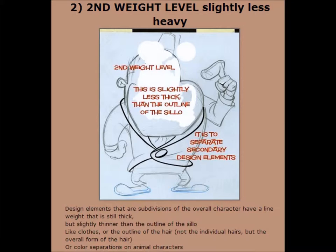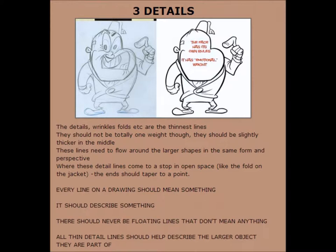Detail lines should not be totally one weight though; they should be slightly thicker in the middle. These lines need to flow around the larger shapes in the same form and perspective. Where these detail lines come to a stop in open space, like the fold on the jacket, the ends should taper to a point. Every line on a drawing should mean something — it should describe something. There should never be flowing lines that don't mean anything. All thinnest lines should help describe the larger object they are part of.